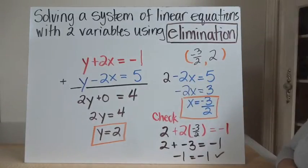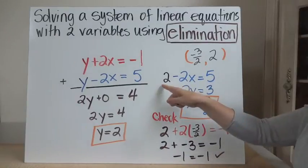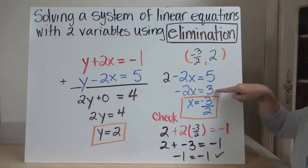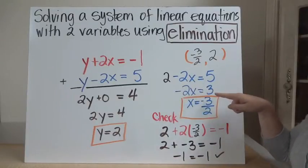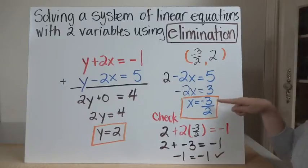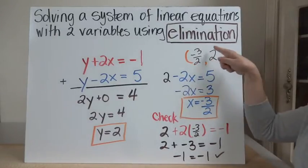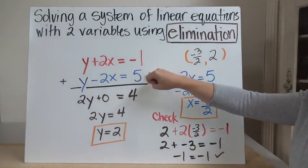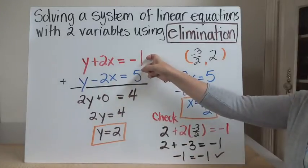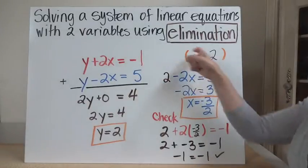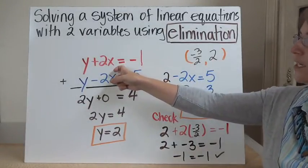So I have 2 minus 2x equals 5. Now I'm going to solve for x. I'm going to subtract 2 from both sides. That gives me 0 on this side, and 5 minus 2 gives me 3. So I have negative 2x equals 3. Now I'm going to solve for x by dividing both sides by negative 2, and I have x equals negative 3 halves. Now I have my x coordinate. This is the point at which these two lines cross. I can check by using the other line.